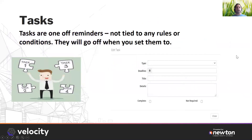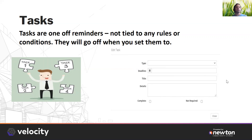Let's first look at tasks. Tasks are once-off reminders — they're not tied to any rules or conditions. When you set them up, you'll choose a type of task: is it going to be an email, a follow-up, a text message or SMS? You can set a deadline, a title, as well as any details for that specific task. So let's jump into Velocity to see what this looks like.